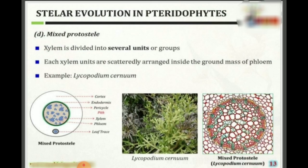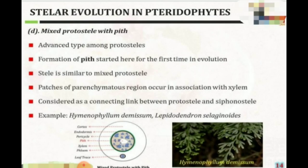The fourth type of protostele is mixed protostele. In mixed protostele, the xylem is divided into several units or groups. Each xylem unit is scattered in a ground mass of phloem. Example is Lycopodium cernum.